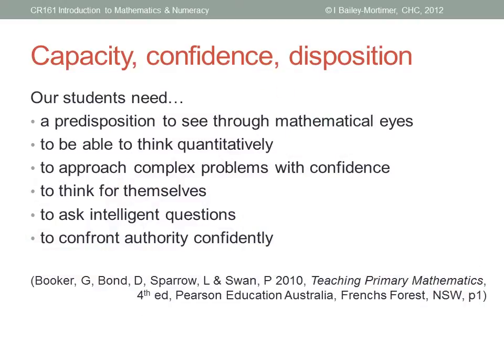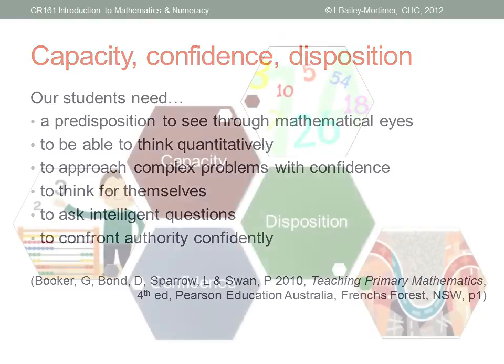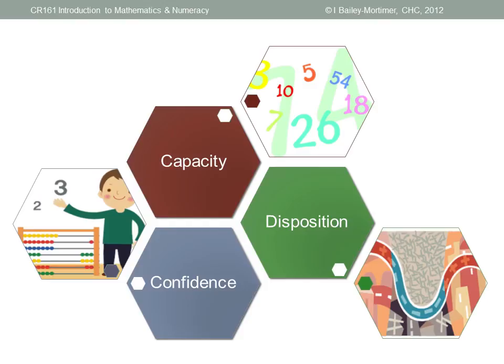Booker, Bond, Sparrow and Swan put it like this in their book Teaching Primary Mathematics. We need our students to develop a predisposition or an inclination to see the world through mathematical eyes. The ability to think quantitatively — that's number sense, calculation skills, estimation. The confidence to approach complex problems, knowing they can make progress towards a solution. A willingness and an ability to think for themselves, to investigate issues carefully and thoroughly and to ask the hard questions. And confidence to confront authority, asking appropriate intelligent questions based on logical, reasoned thought and quantitative analysis. The capacity, confidence and disposition to use mathematics.